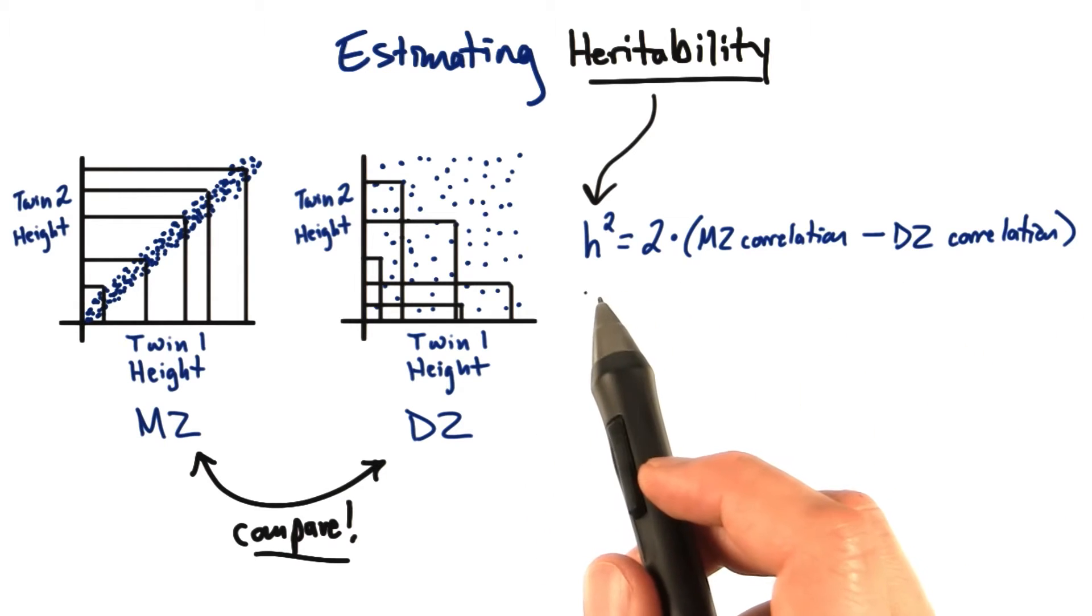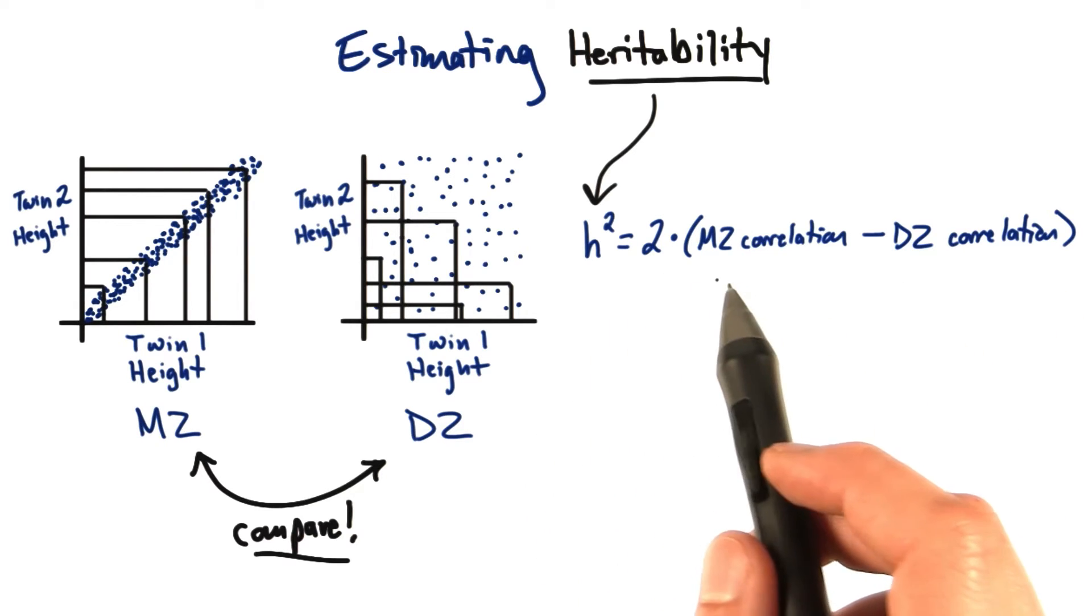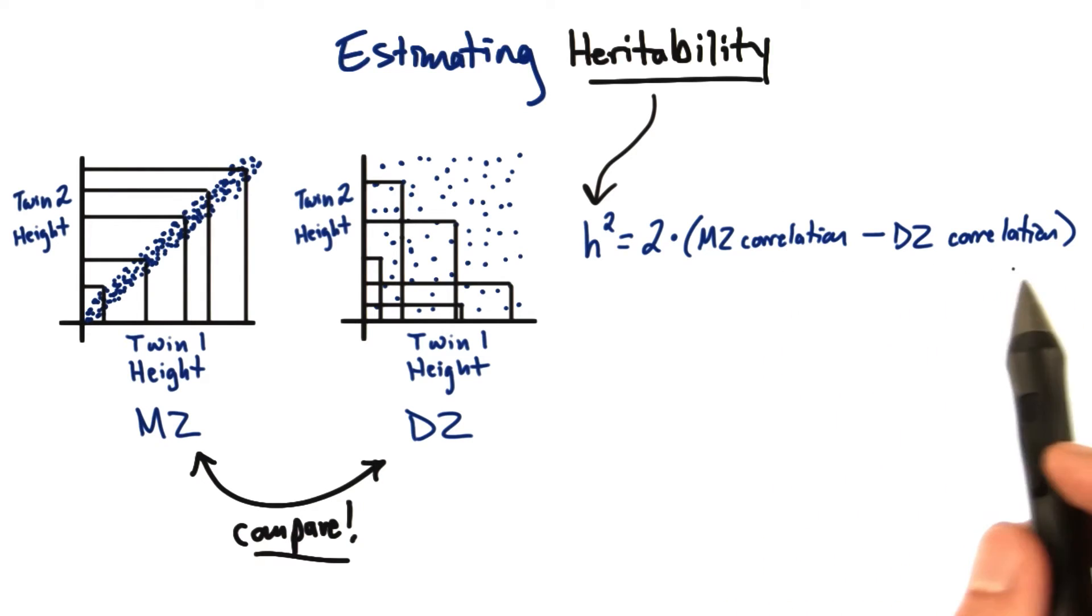And this is the equation here. Heritability is equal to two times the monozygotic correlation minus the dizygotic correlation.